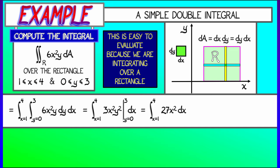Now we have a single integral — just integrate 27x² dx and evaluate as x goes from 1 to 4. That gives us 9x³ from 1 to 4, which is 567. Now that's it — we're done.